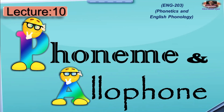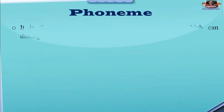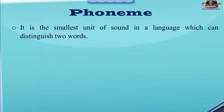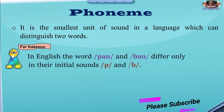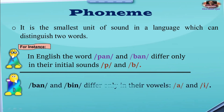Let's talk about our today's topic. We have already defined phoneme, but once again, because we are going to make a difference between allophone and phoneme: a phoneme is the smallest unit of sound in a language which can distinguish two words. For instance, the words 'pen' and 'ben' differ only in their initial sounds /p/ and /b/; otherwise, 'en' and 'en' are the same. Also, 'ben' and 'ban' differ only in their vowels /e/ and /a/. Such differences in pronunciation that distinguish different words are called phonemes.